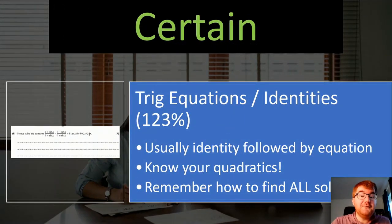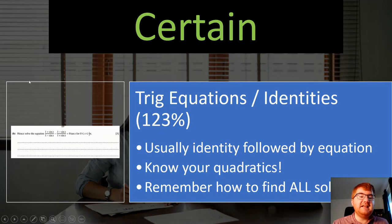Onto trig equations and identities. This is usually in the structure of, they have an identity that you'll need to show or prove. And then they've got that keyword here that you'll see here. Hence, so using that answer, then solve the particular equation. So even if you don't get the first part correct, you can use the result from that to help you with part B. So make sure you know your quadratics as well, as I've mentioned just then, because it can also appear too.